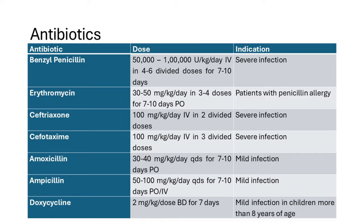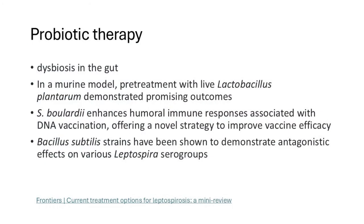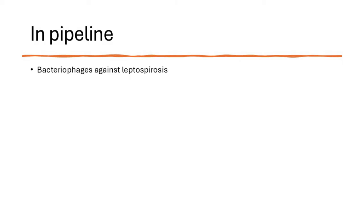Regarding novel therapies, probiotics are being investigated. In a murine model, pre-treatment with live Lactobacillus plantarum provided significant protection against leptospirosis. Saccharomyces boulardii has been found to increase humoral immune response associated with DNA vaccination, potentially improving vaccine efficacy. Bacillus subtilis demonstrated antagonist effects on various Leptospira serogroups. Probiotic therapy is not yet standard of care but shows promising results. Bacteriophages against leptospirosis are also being explored but remain in the experimental phase.